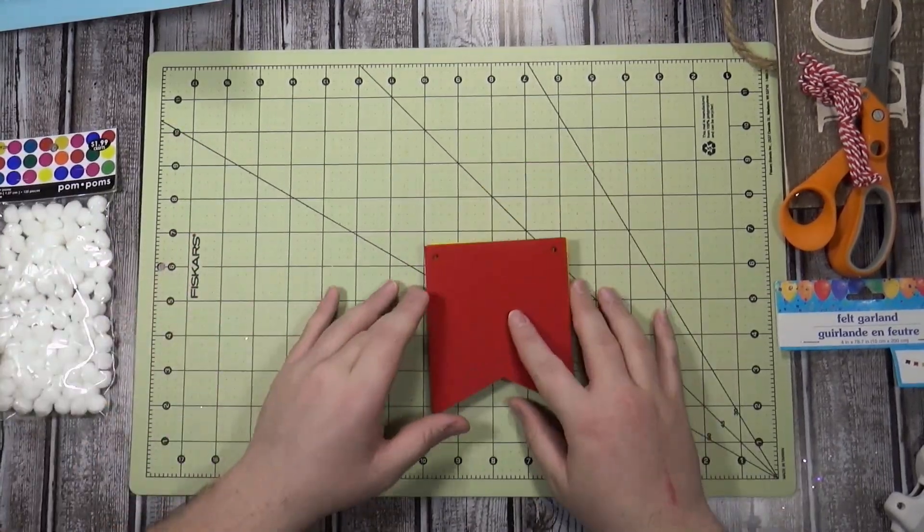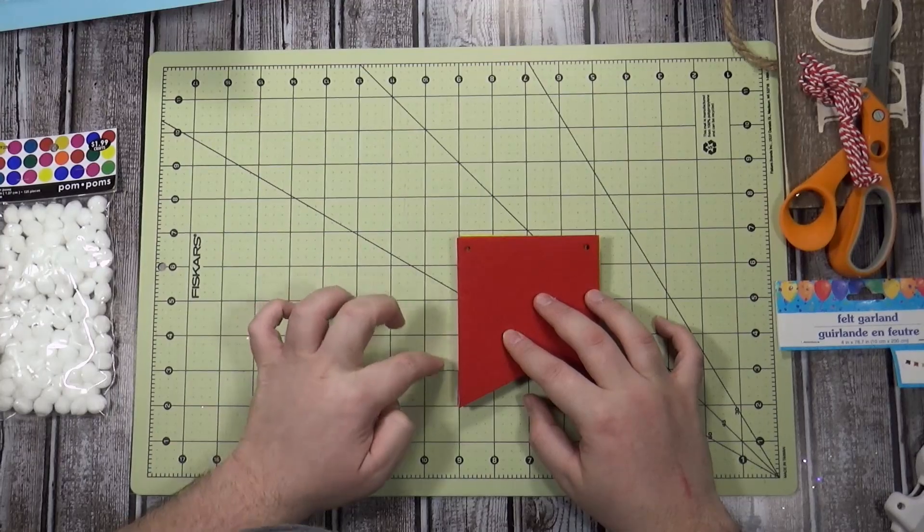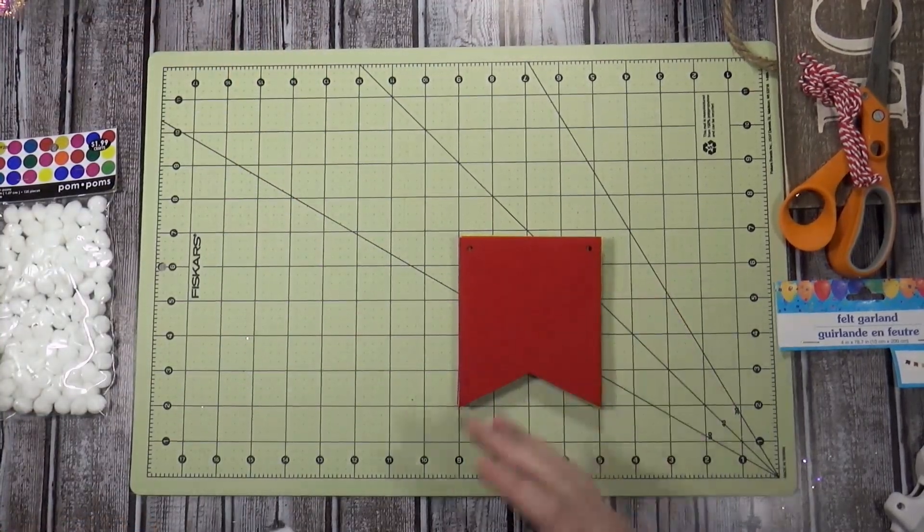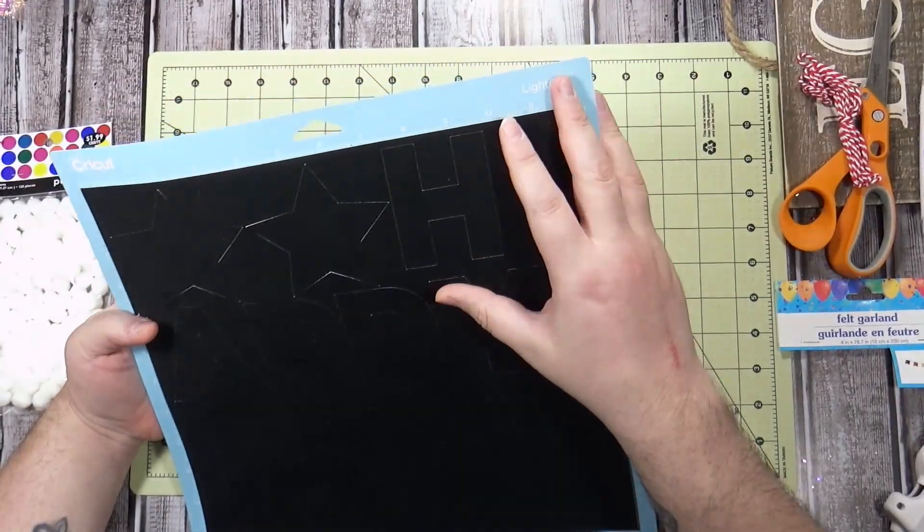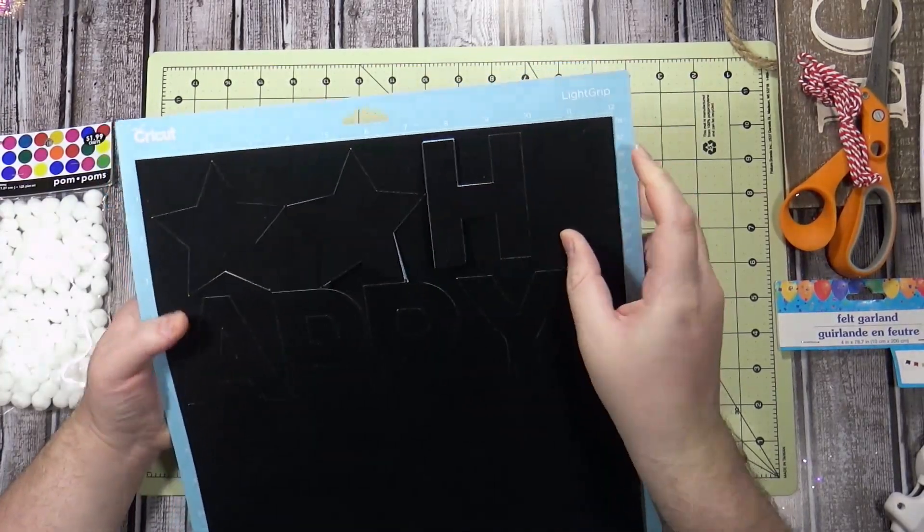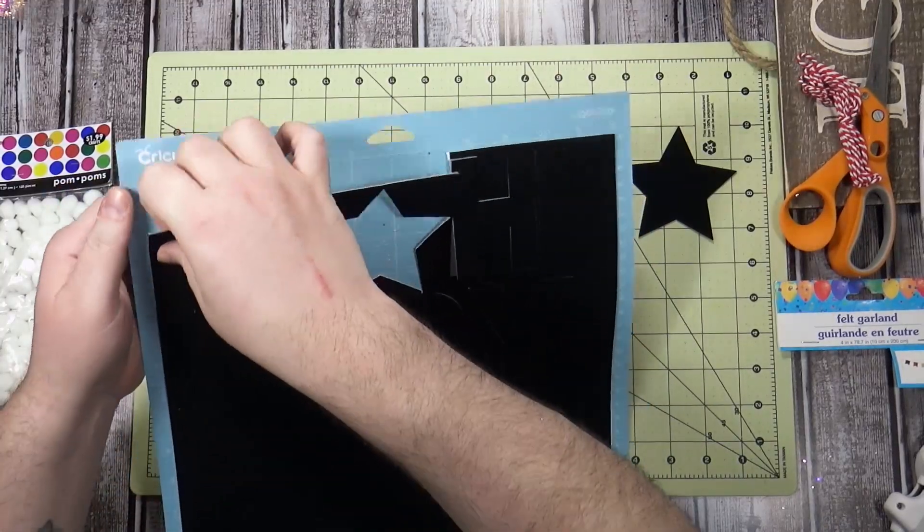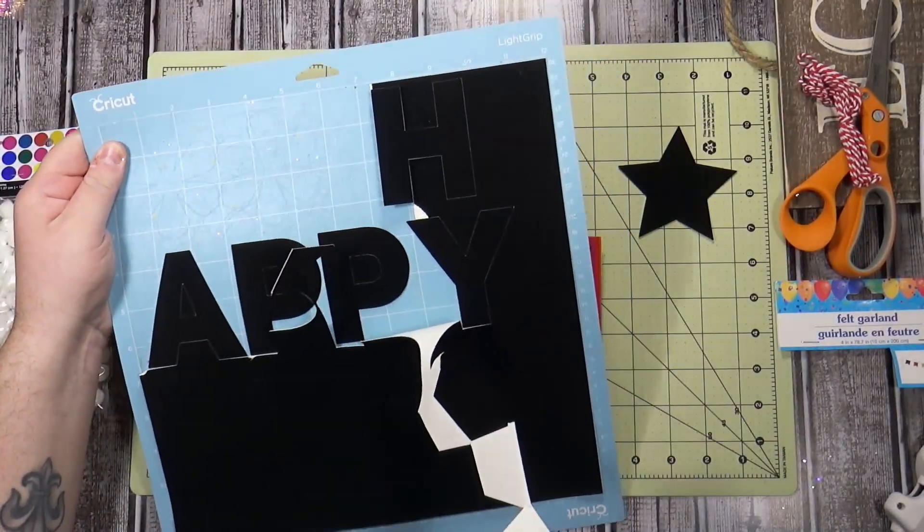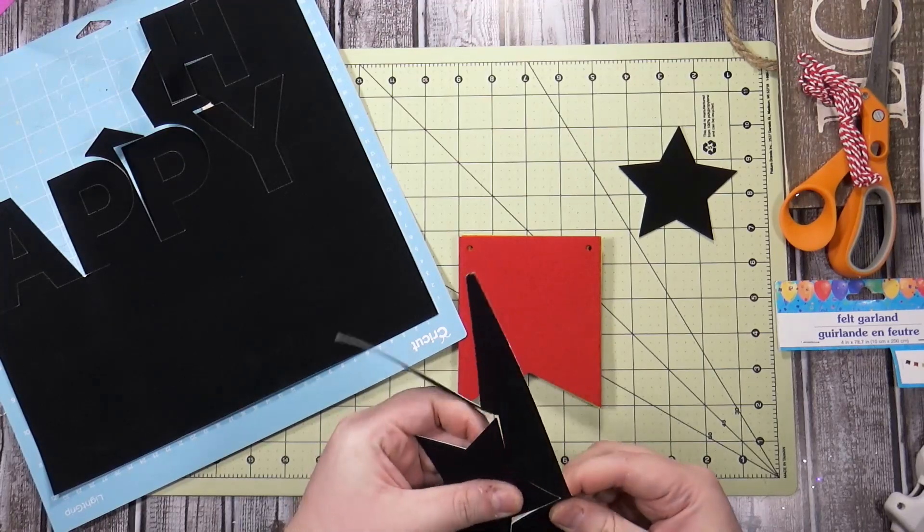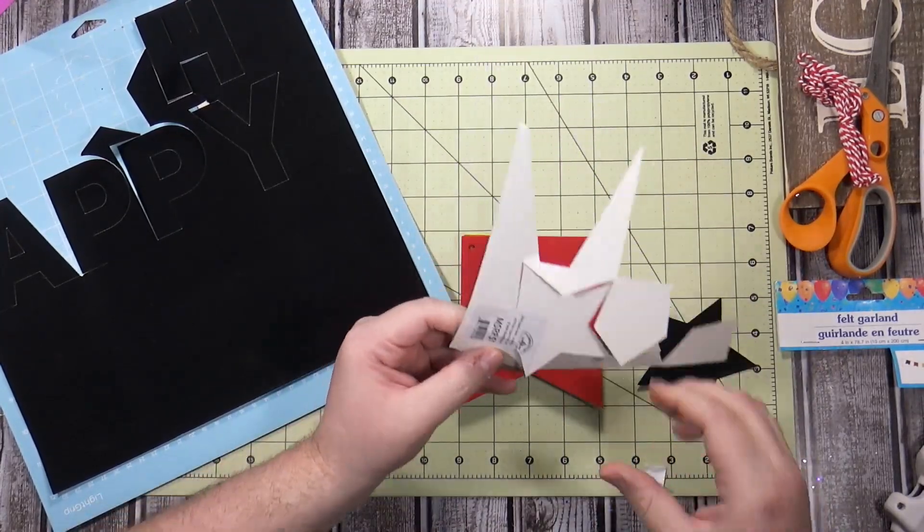I measured and these are like four inches by five. I didn't want to cut out my letters that spell happy any bigger than like three and a half just to be on the safe side. So I cut them out of my Cricut. The project file is down below. This is velvet cardstock. I cut it on the heavy cardstock setting with more pressure.